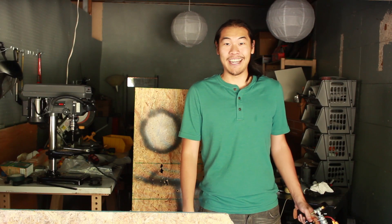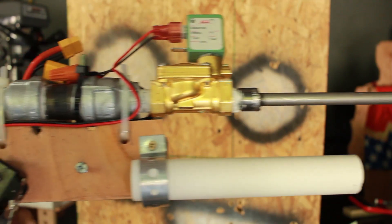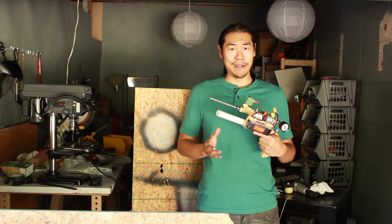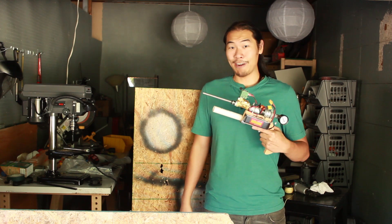So to test out different grappling hook designs, I've made this. This is a really fun little air gun I've made mostly out of plumbing parts and scrap wood. Hopefully it'll launch some grappling hooks.